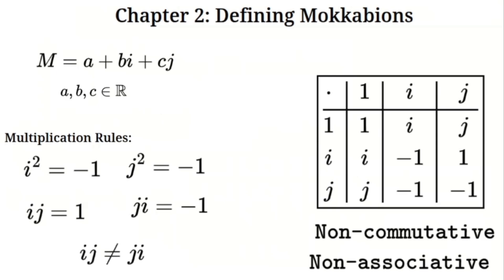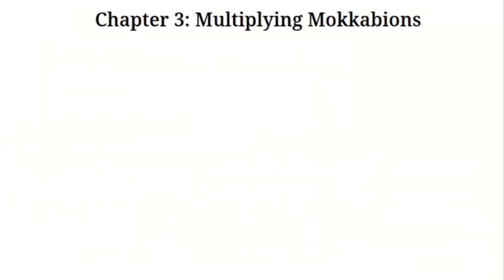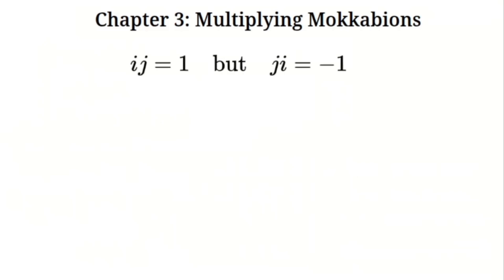To multiply two Mokabians, we need to understand how multiplication works in an algebra that is both non-commutative and non-associative. We deal with three types of elements: a real number r, and two imaginary units i and j. These imaginary units follow specific rules: i·j = 1, but j·i = −1. This means the order of multiplication matters — a lot.